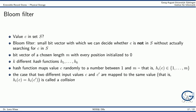With a bloom filter, we want to decide whether a value c is in a set S or not. More precisely, a bloom filter is a small bit vector with which we can decide whether c is not in S without actually searching for it in S. A bit vector has a fixed length m with every position initialized to 0.